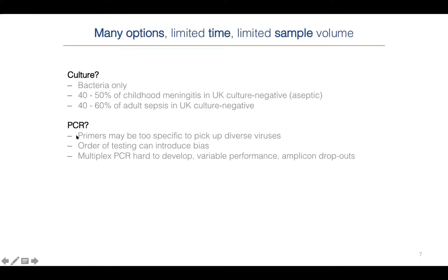You could try PCR — maybe there's a virus. But PCR requires very specific primers and a good setup. It's faster than culture but has pitfalls: primers can be too specific to pick up diverse viruses of interest, as is true for HIV, HCV, and enterovirus, which is extremely diverse and some markers are just not very good at picking it up in clinical samples. The order of sequential PCRs can introduce bias, deplete the sample, and waste time. Multiplex PCR with overlapping or separate amplicons is very hard to develop, needs optimization, can have variable performance across labs, and can suffer from amplicon dropouts.